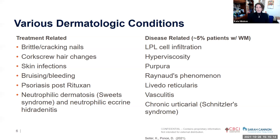Here is a list of the various dermatologic conditions, both treatment-related and disease-related. Treatment-related conditions we often see are brittle and cracking nails, corkscrew-like hair changes, skin infections, bruising and bleeding, psoriasis, post-rituximab neutrophilic dermatosis (also called Sweet syndrome), and neutrophilic eccrine hidradenitis. Disease-related conditions are rare in WM — about five percent of patients — and can include infiltration of LPL cells, hyperviscosity purpura, Raynaud's phenomenon, livedo reticularis, vasculitis, and chronic urticarial symptoms (Schnitzler's syndrome).